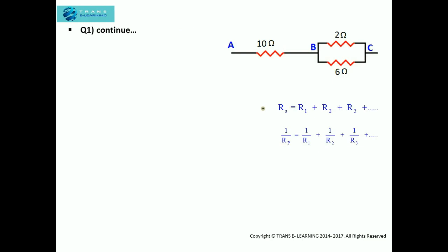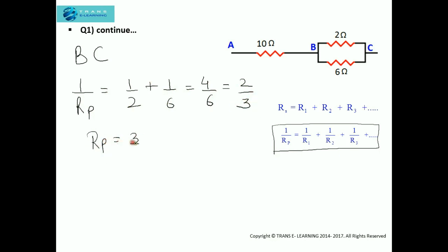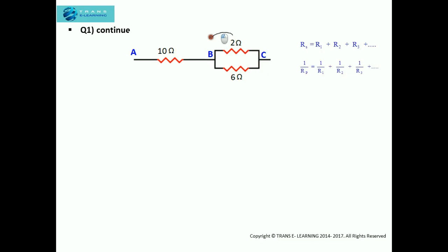The first step is to find the equivalent resistance of the two resistors in parallel. For a parallel combination, we take the reciprocal of each resistance. Let the equivalent resistance be RP. So it will be 1/2 plus 1/6, which comes out to 4/6, giving us 2/3. Taking the reciprocal, we get 3/2 which equals 1.5 ohm. So the equivalent resistance between B and C is 1.5 ohm.